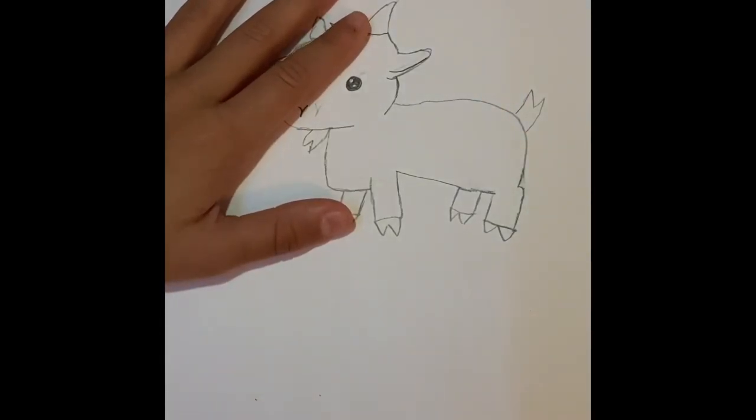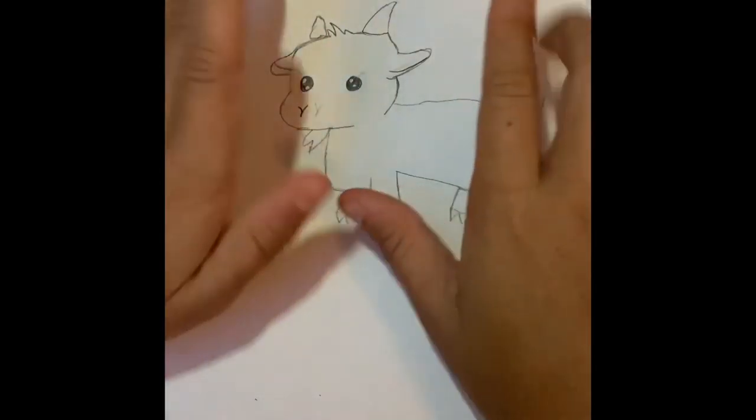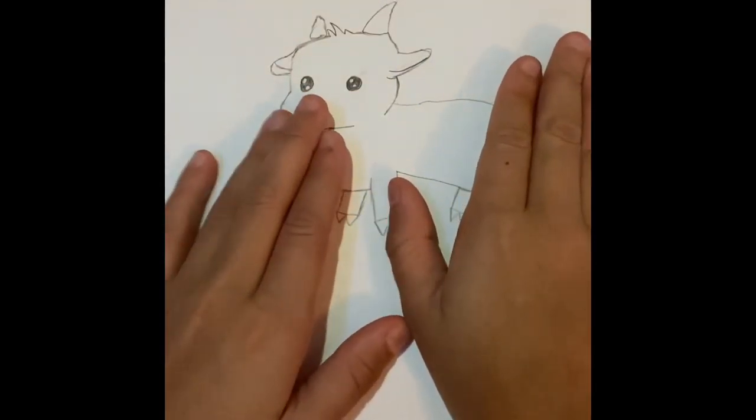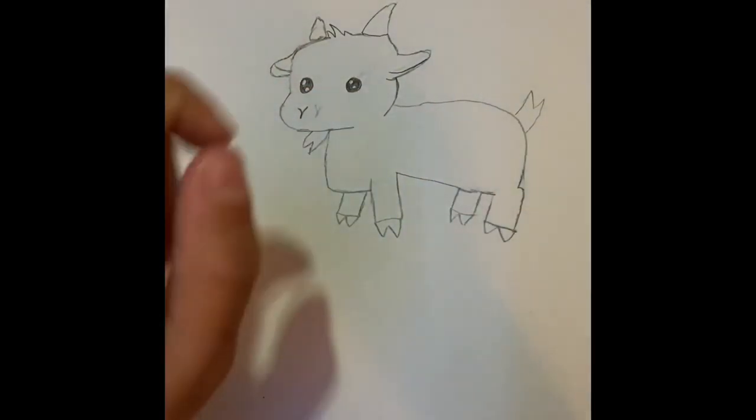Now we are going to go in time-lapse, fast mode, and go color him, and go over him in Sharpie. Let's go.